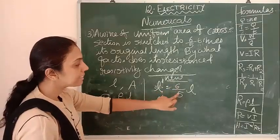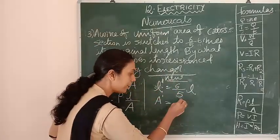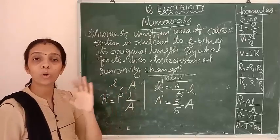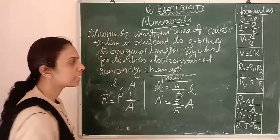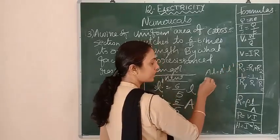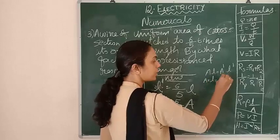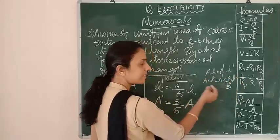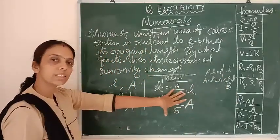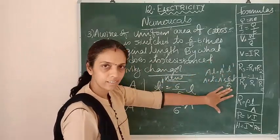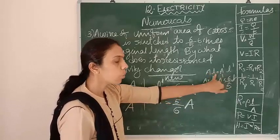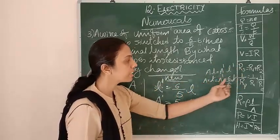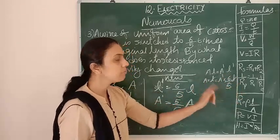Since volume is conserved: A into L equals A dash into L dash. The new length L dash is 6/5 times L. So A dash equals A times L divided by L dash, which gives A dash equals 5/6 times A. So if length increases by factor 6/5, area decreases by factor 5/6.